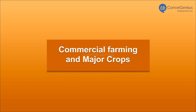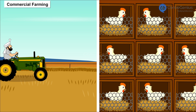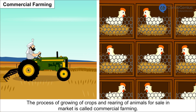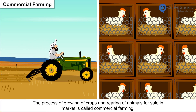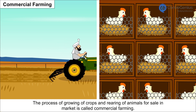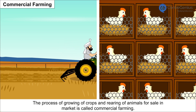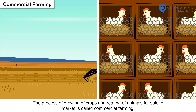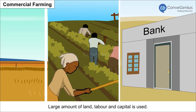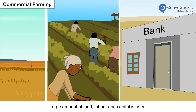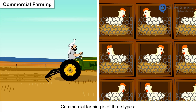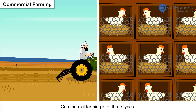Commercial Farming is the process of growing crops and rearing animals for sale in market. Large amounts of land, labour and capital are used. Commercial Farming is of three types.